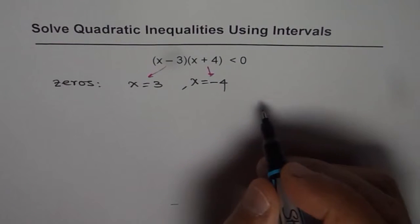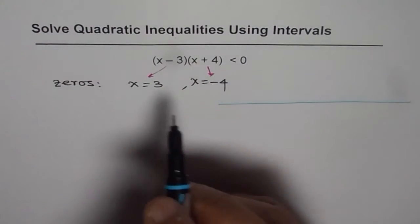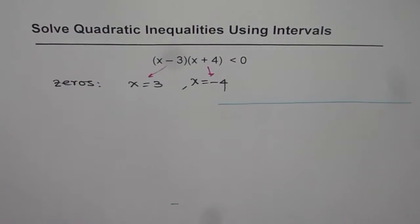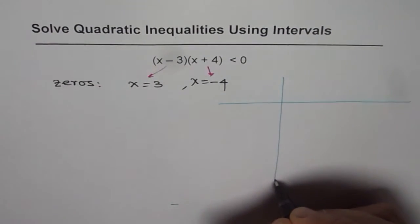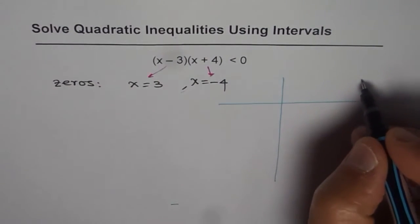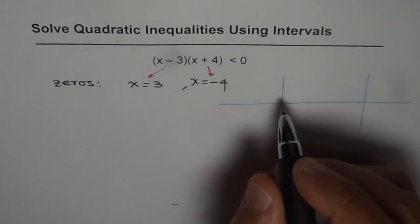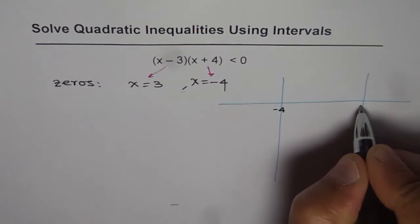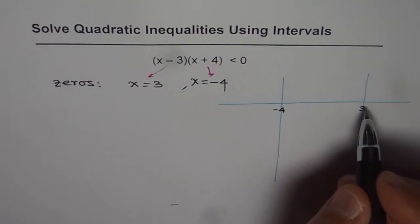So basically if you see the x axis, let us say that is our x axis, then we have two zeros here. One is at minus 4. Let us say this one is at minus 4. The other one is at 3. So these are the two zeros. The points on the x axis are minus 4 and 3. So that is where we have zeros.